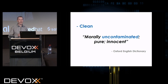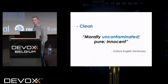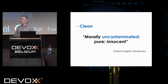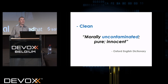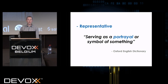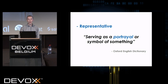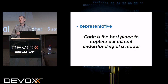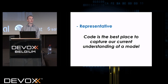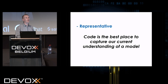What does 'clean' mean? Morally uncontaminated, pure, innocent. Wouldn't it be wonderful if our code was? Most code is very unclean. I'm all behind the clean code movement. And 'representative' — it should serve as a portrayal of something, a symbol. Our code should actually state its intent clearly. Code is the one thing that will always be running on your project: documents get out of step, comments get out of step, but the code is where we should capture our understanding. We should constantly keep updating it, like gardening.